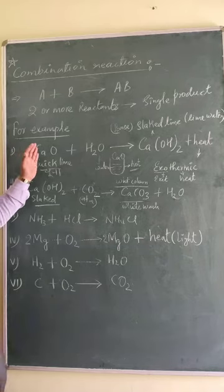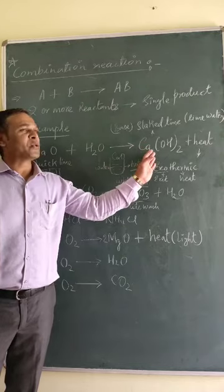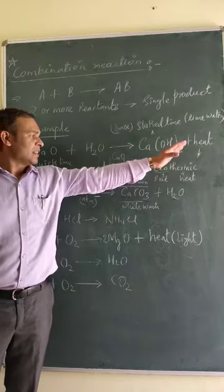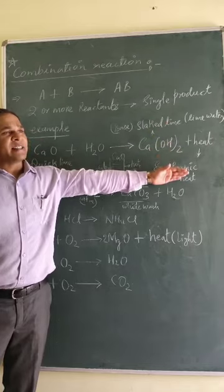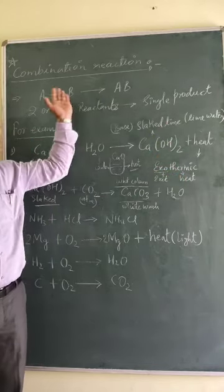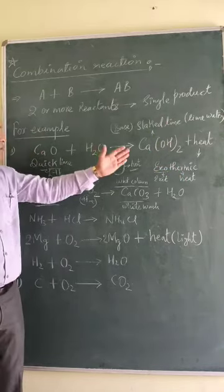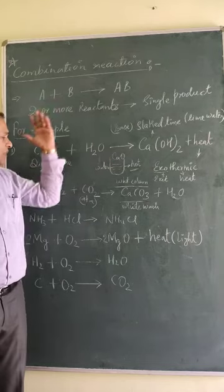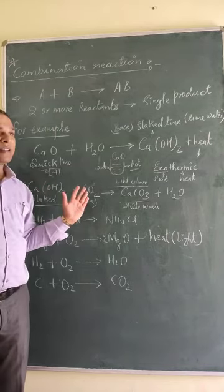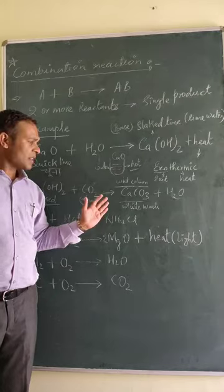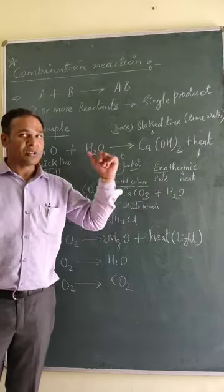So to summarize: when quick lime is added into water, slaked lime is formed along with heat — so it is an exothermic reaction as well as a combination reaction. Also, when slaked lime combines with carbon dioxide, it produces calcium carbonate along with water — that is also a combination reaction.